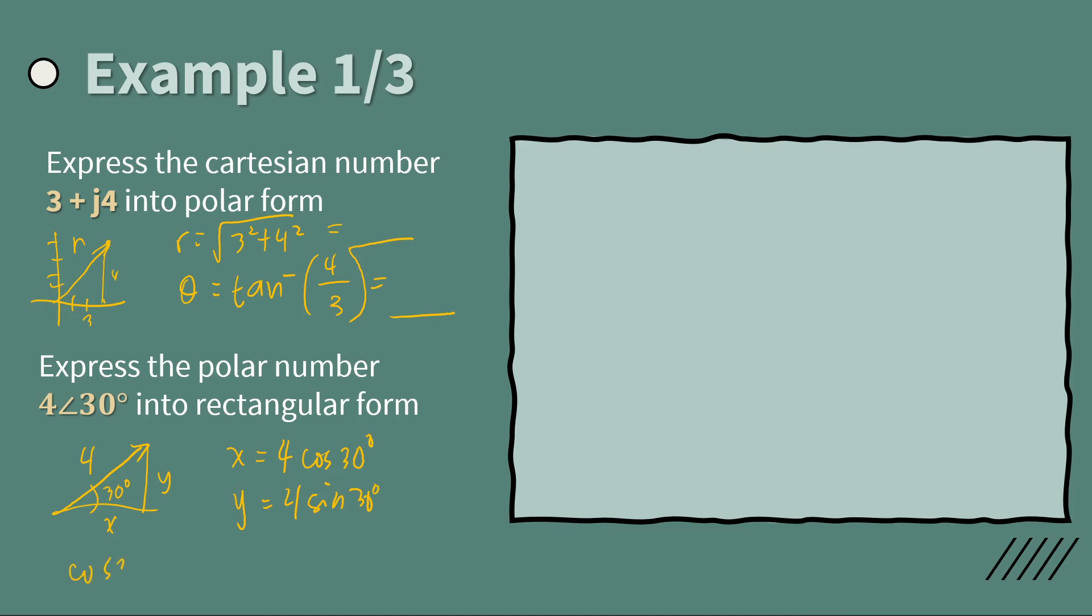So if you don't know how this works, cosine 30, cosine the angle is the adjacent which is x over the hypotenuse. And then you just cross multiply and you will get this equation. And this is the same for the sine function here. So having that value, then you will have x plus jy, which is the rectangular form.